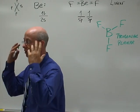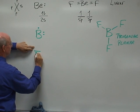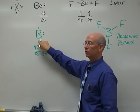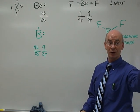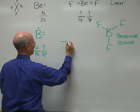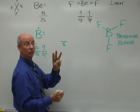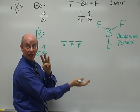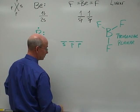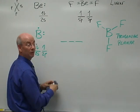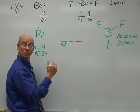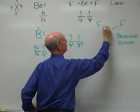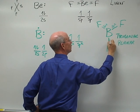For boron, traditionally we have 2S with two electrons and 2P with one. But we have three electrons, so let's hybridize. We use S and two P orbitals. Since there are two P's, we mix them all together and they become SP², SP², SP² — with one electron in each. That gives us the three equidistant bonds needed to explain the trigonal planar shape.